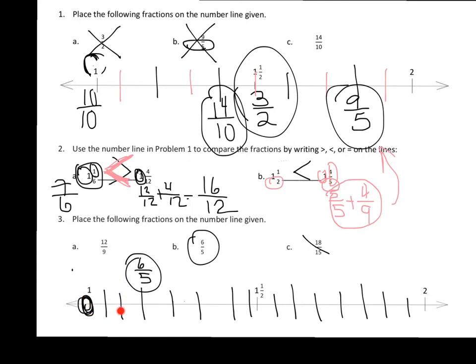So sixteen, seventeen, eighteen fifteenths. These are at the exact same spot. And if you did notice, triple the six to eighteen, triple the five to fifteen. They are exactly the same.